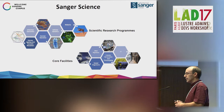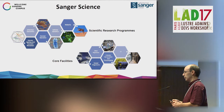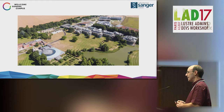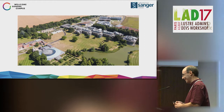We're looking at cellular genetics, the internals of each cell and what controls it. Supporting all that, we've got a bunch of groups — IT is one of them, DNA pipelines, and other supporting groups. Here is our lovely campus in Hingston, near Cambridge in the UK. It's a beautiful place to work, but getting there is a challenge because there's very little public transport.